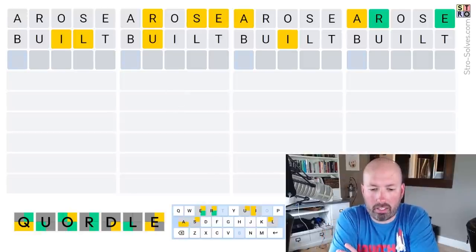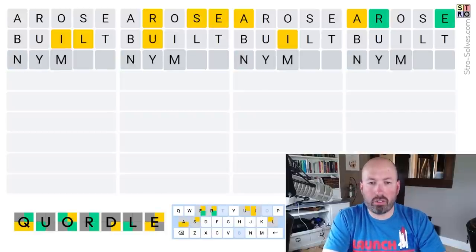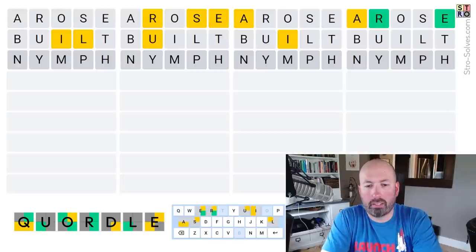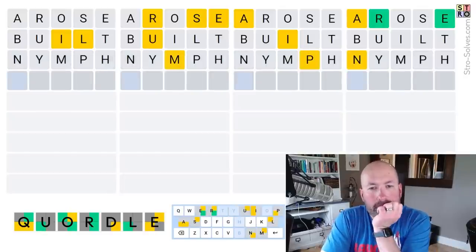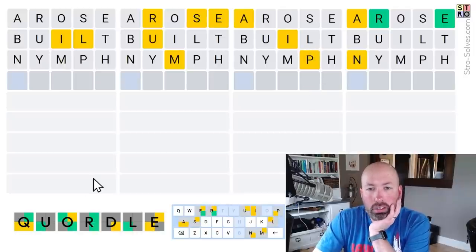Okay, so I'm kind of thinking about doing a third word with new letters because I'm actually gonna do Nymph. It's five new letters. It sees if there's a Y. I'm just gonna try that. Okay, so there's no Y in any of them, so that was no good.